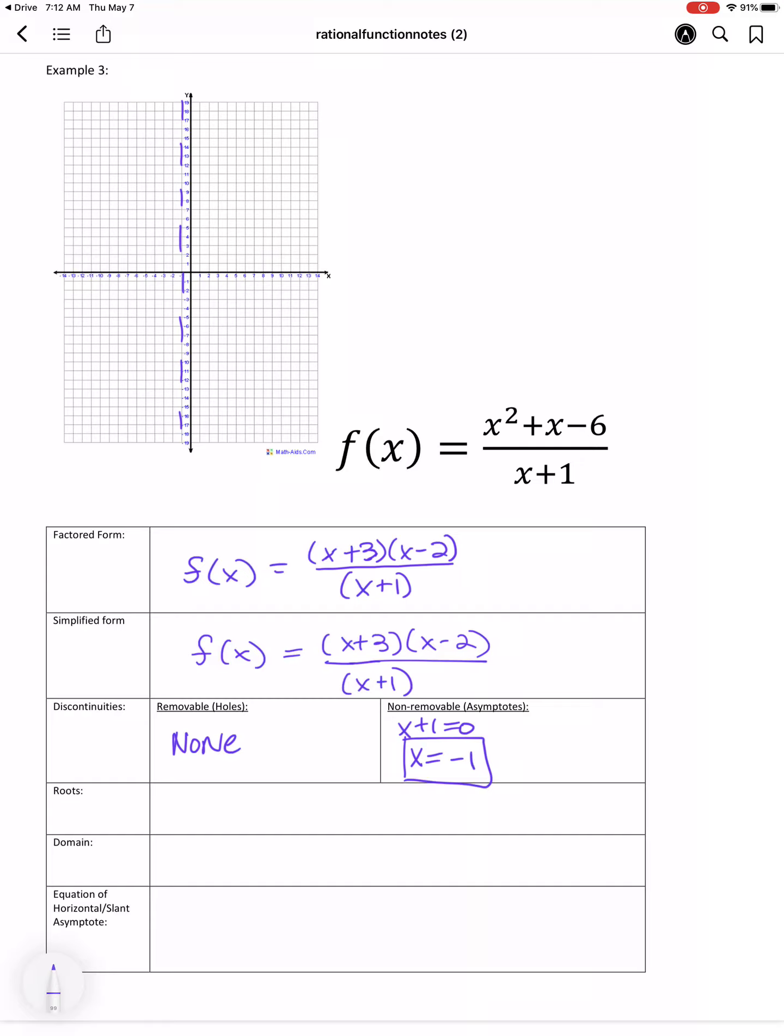For the roots, we have two possibilities: x plus 3 and x minus 2 equals 0. So we have roots at x equals negative 3 and x equals 2, giving us two points, negative 3, 0, and 2, 0. So I'll go ahead and plot those guys in.